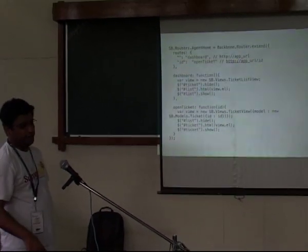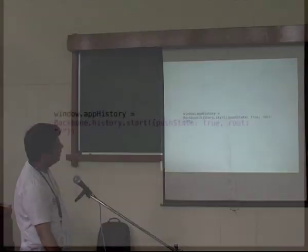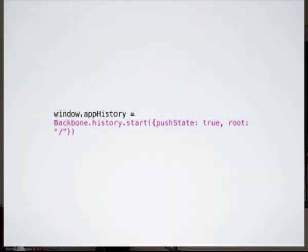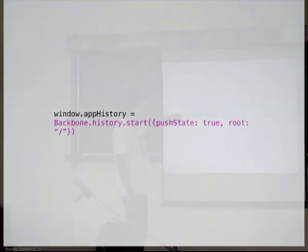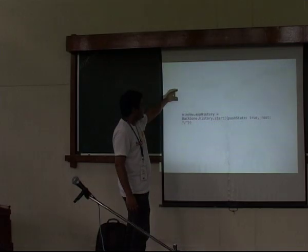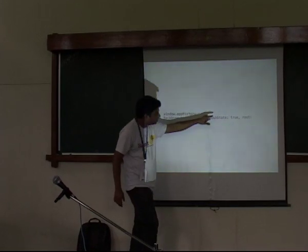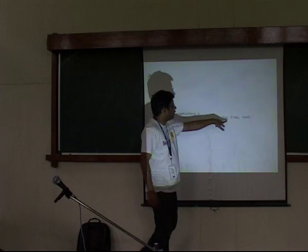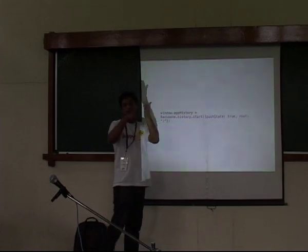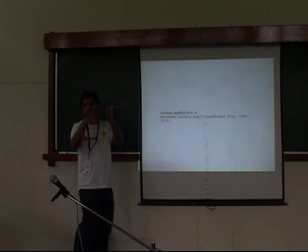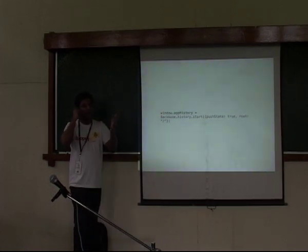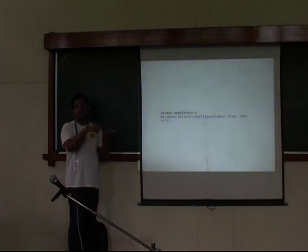That is the entry point. You initialize the router and then you start the history. This is where you can opt into push state. But if push state is not supported, Backbone will change it back to hash. If you want HTML5 routes, it should be slash. To run your app, you initialize a new router instance.